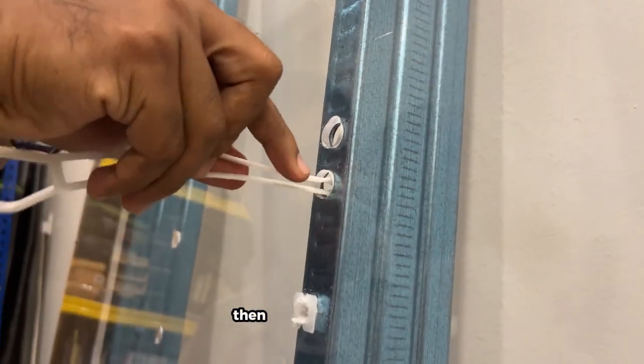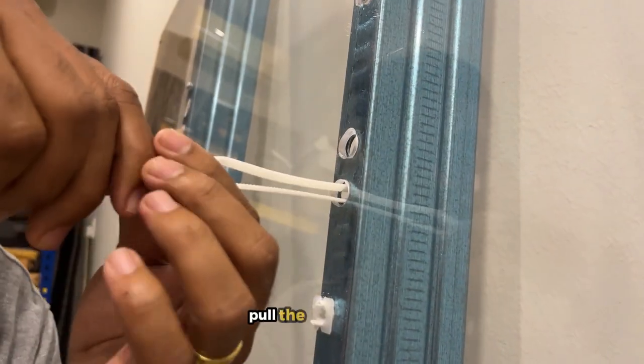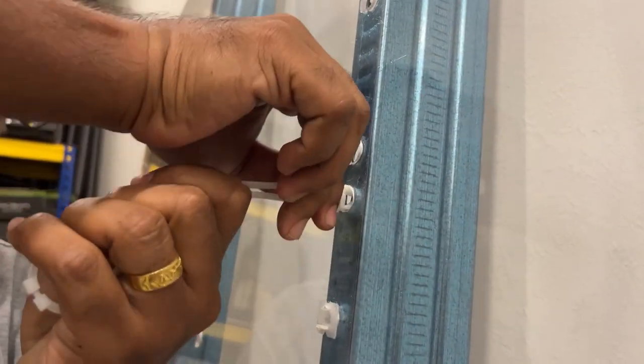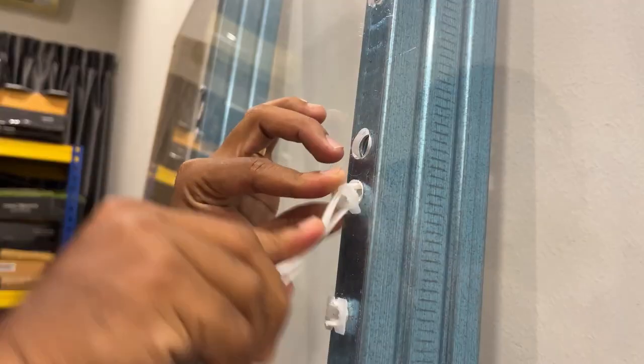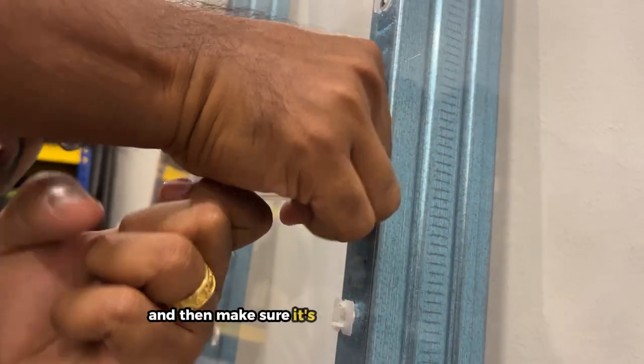Then pull it - same process. Pull the clip towards the metal stud and then make sure it's tight, and pull it up and down.